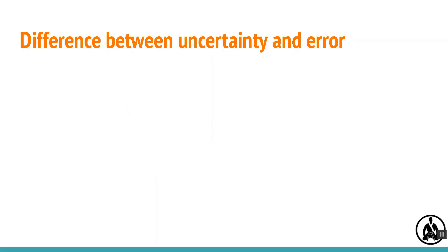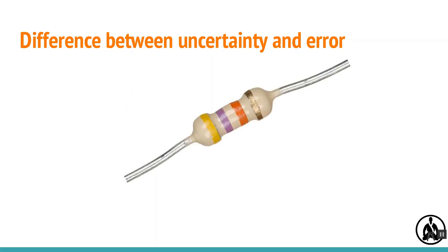Suppose I carry out an experiment to find the resistance of a resistor and I get a value of 490 ohms. This is called my experimental value. I know my value won't be exactly right and so I estimate how far off I think it might be and I write it like this.